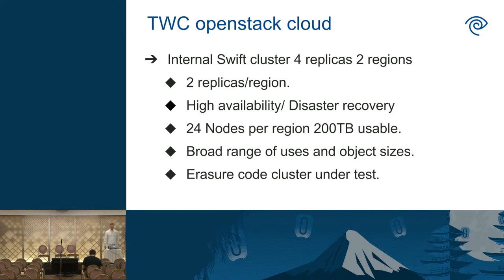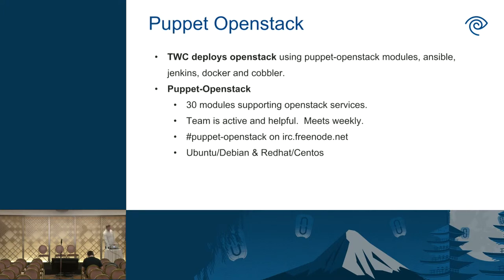On the side, we're also working on standing up an erasure-coded cluster using some new features in Puppet Swift that I'm developing, and we'll probably use that for a more high-performance setup, maybe for some video content. At TWC, we use Puppet, Ansible, Jenkins, and Docker to deploy our OpenStack cloud.